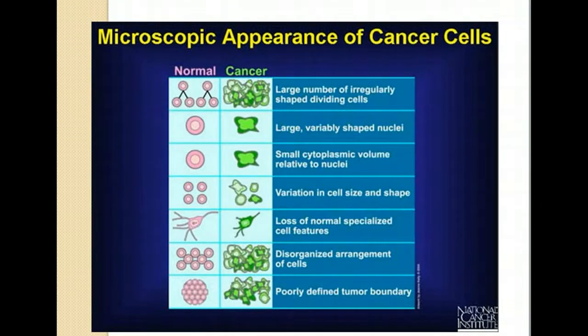When a person undergoes diagnosis of cancer, many different tests are performed: MRIs, CAT scans, PET scans, and biopsies. When a pathologist examines the cancer cells, they look very different from normal cells — confirmation of cancer often comes from the pathology report. Cancer cells are sometimes not well defined, may be disorganized, and their nuclei can look very different from normal.